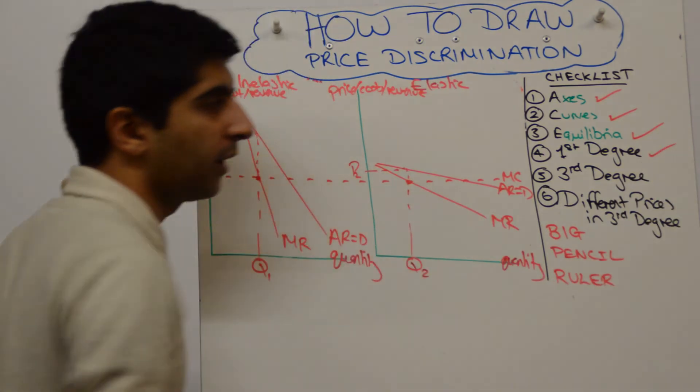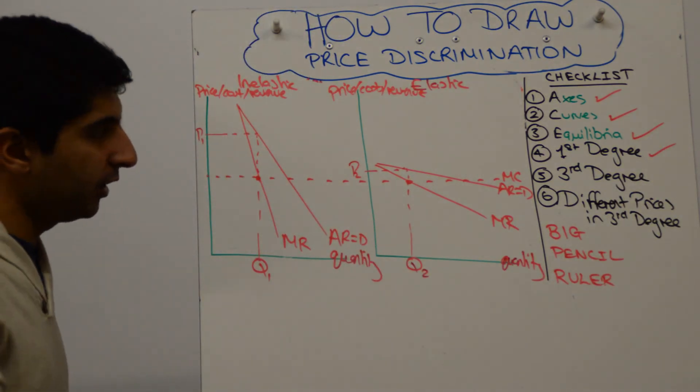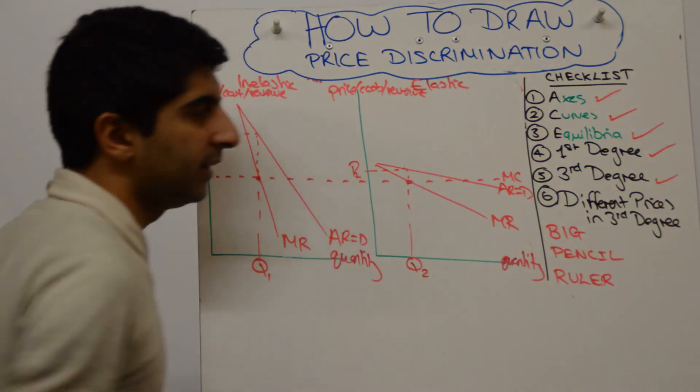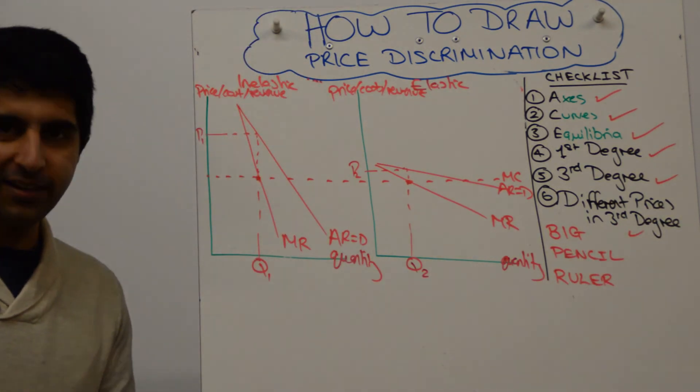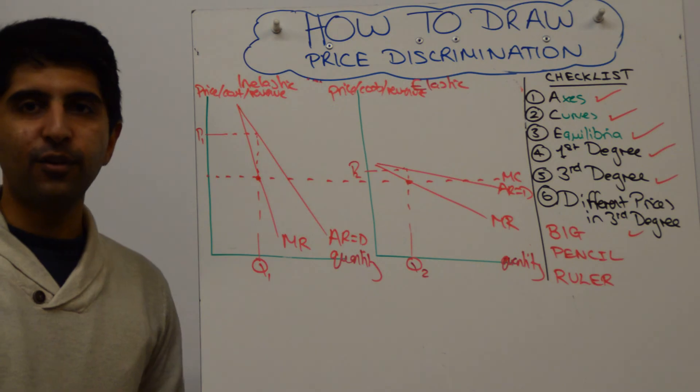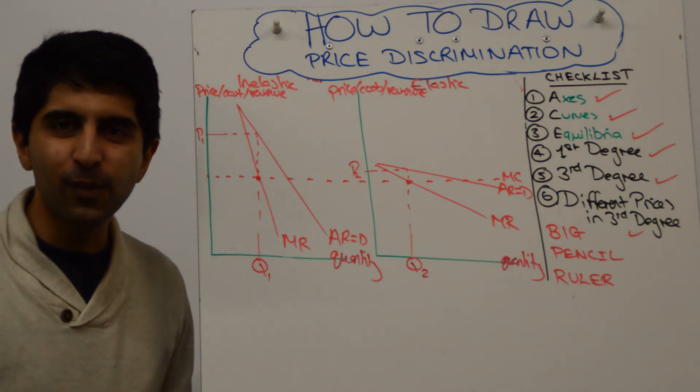We did the first degree diagram. So that one was done. Third degree diagram has been done as well. Different prices in third degree has been shown too. Lovely. In which case we're done. These are the diagrams you need for price discrimination. Thanks for watching. I'll see you all in the next video.